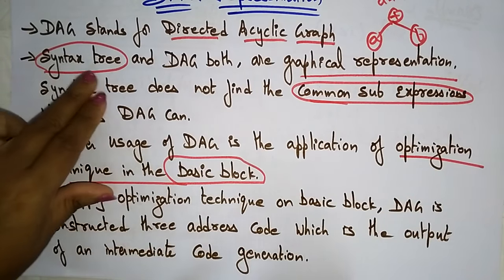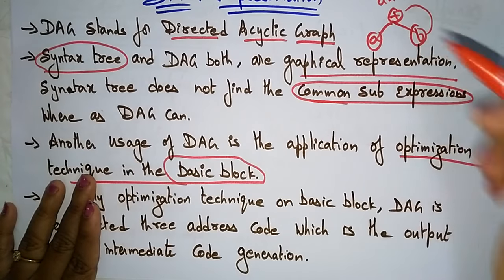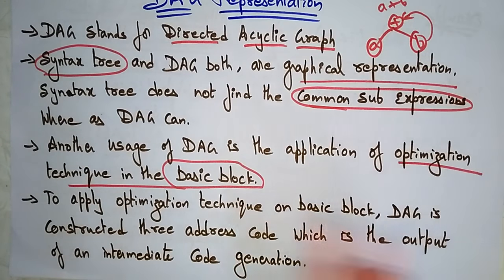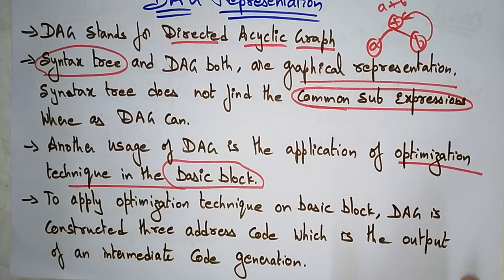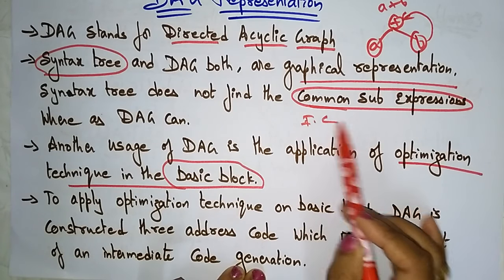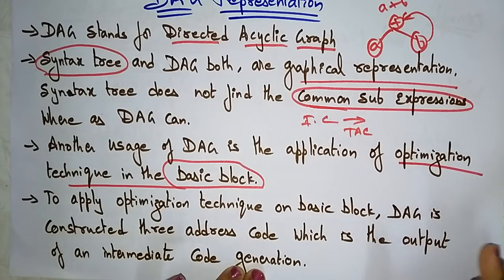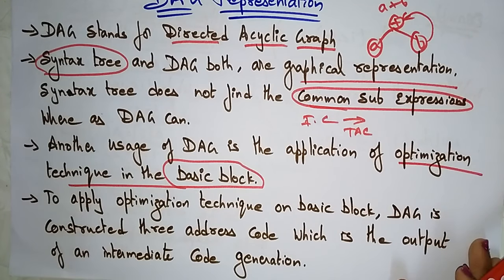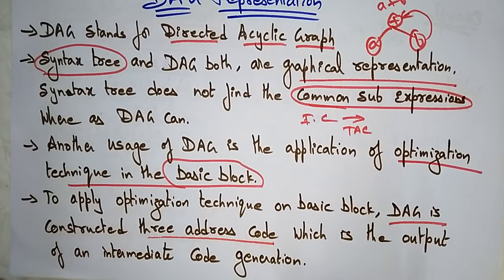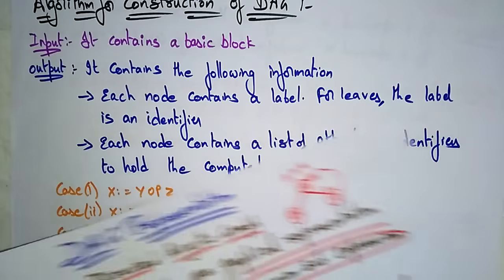The syntax tree is a tree, whereas a DAG is a graph — it can also have closed loops. That is another difference. The DAG constructs the three-address code, which is the output of the intermediate code generator. To apply optimization techniques on the basic block, the DAG first constructs the three-address code from intermediate code generation.